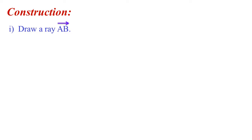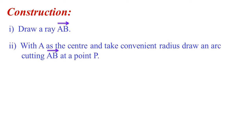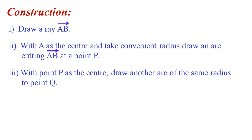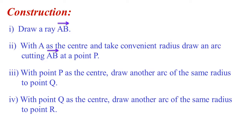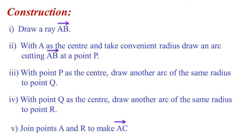Now let's write the construction following the above steps. Step 1: Draw a ray AB. Step 2: With A as the center and take a convenient radius, draw an arc cutting AB at a point P. Step 3: With point P as the center, draw another arc of the same radius to point Q. Step 4: With point Q as the center, draw another arc of the same radius to point R. Step 5: Join points A and R to make the ray AC.